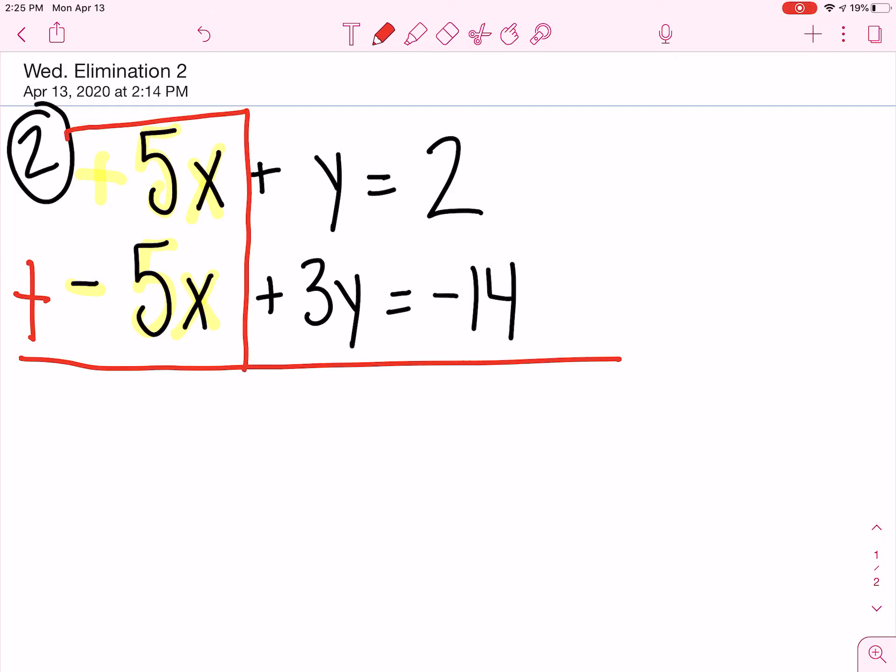Let's add our x's first. We have a positive 5x minus 5x eliminates, and that's a 1y, plus 3y is going to be 4y.